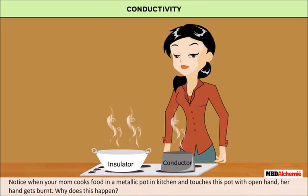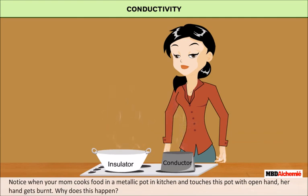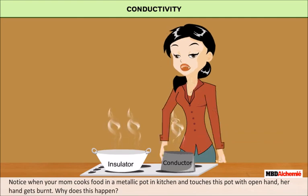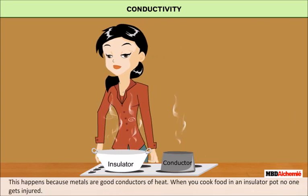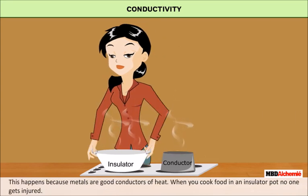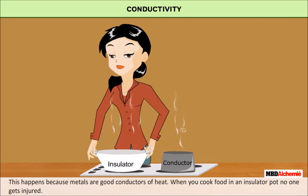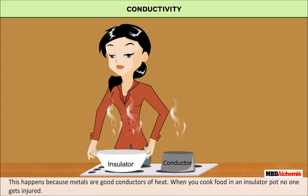Notice when your mom cooks food in a metallic pot in the kitchen. When she touches the pot with an open hand, her hand gets burnt. Why does this happen? Metals are good conductors of heat. When you cook food in an insulator pot, no one is injured.